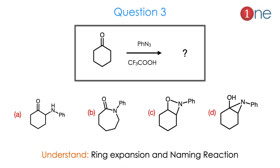Then question number 3. The starting material is cyclohexanone. We are using azide and trifluoroacetic acid. The choices are given: just amine formation, or ring expansion, or a cyclic/fused system forming. You have to understand that one named reaction is involved and ring expansion is a possibility.